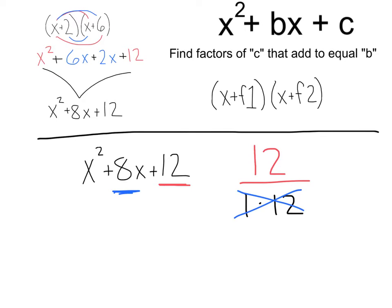What's another factor of 12? Well, how about 2 times 6? 2 times 6 equals 12, and 2 plus 6 is 8. Bingo, we have our answer.